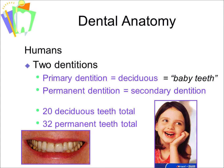What is commonly known as the baby teeth are known as the deciduous dentition or the primary dentition. The adult teeth are the permanent teeth, the permanent dentition or the secondary dentition. Humans have 20 deciduous teeth and 32 permanent teeth.